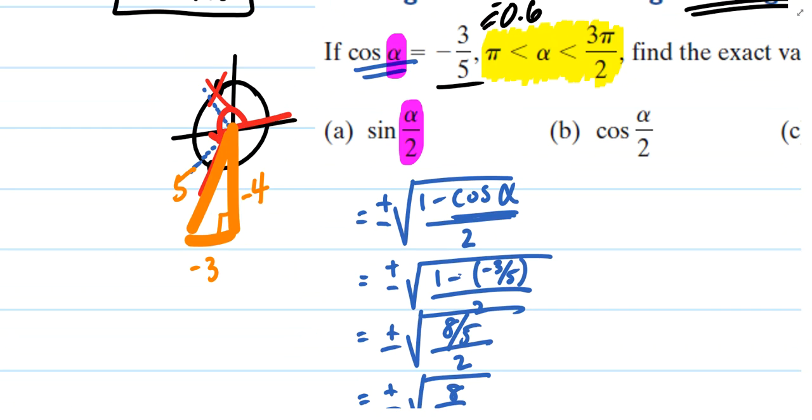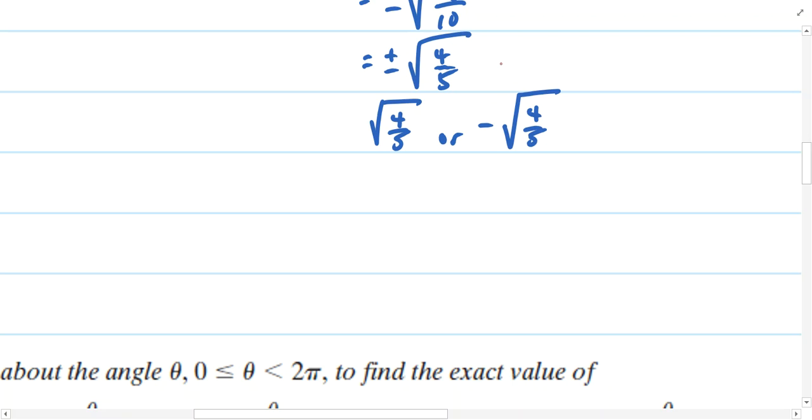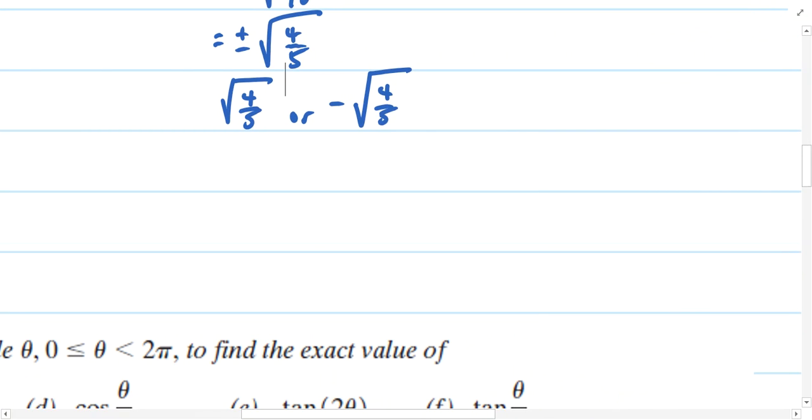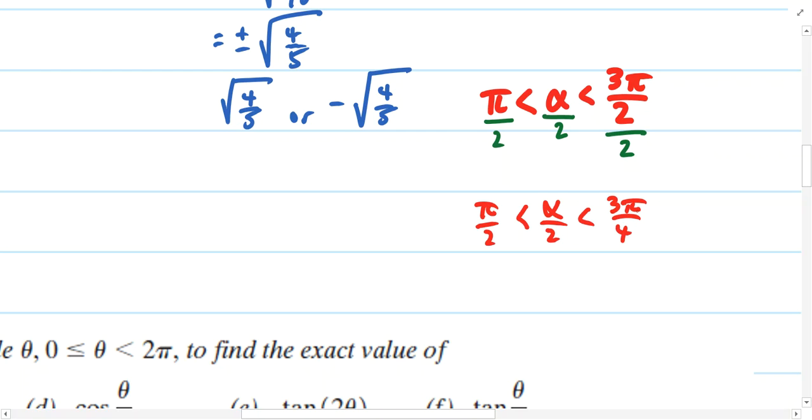You might be thinking halfway around this angle might put us over here somewhere, and that would be a good assumption. If π was less than alpha, which was less than 3π over 2, and we divide alpha by 2, then in this inequality we can divide all of these by 2, and essentially we're saying that alpha divided by 2 must be in between π over 2 and 3π over 4.